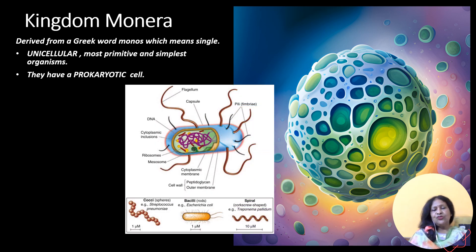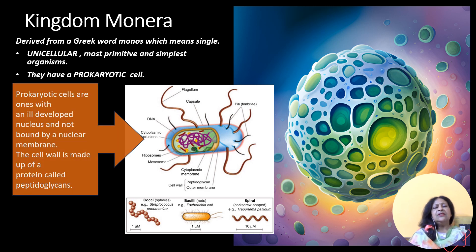They have a prokaryotic cell. The diagram at the center of the screen shows a prokaryotic cell. The nucleus is ill-defined without a nuclear membrane. Some of its representatives have flagella for locomotion. The cell wall is present, which is made up of a protein called peptidoglycan.